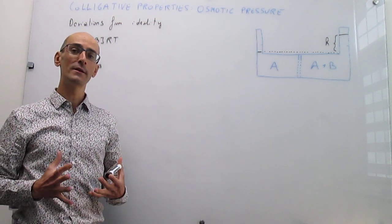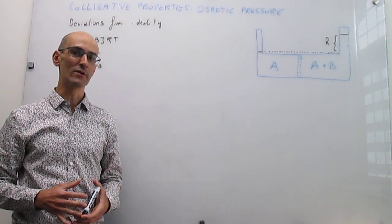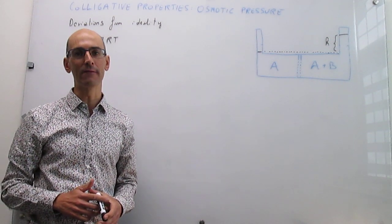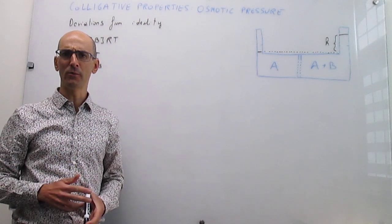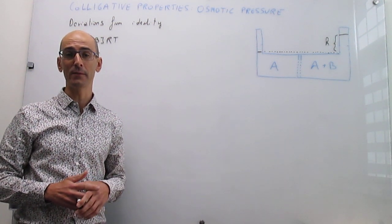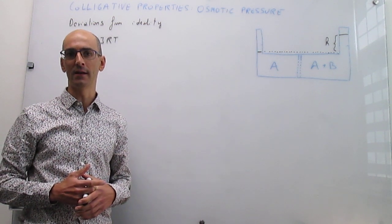Now, there were a bunch of conditions that we actually needed to use in that derivation, but they all boil down to just one, which is ideal behavior. So the question is, what happens to osmotic pressure treatment if you are trying to determine the molar mass of a solute under non-ideal situations?